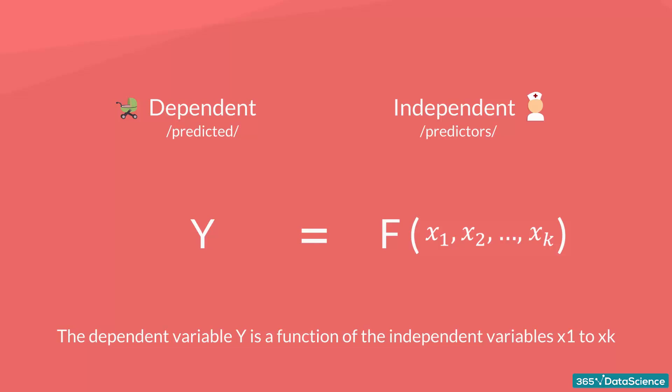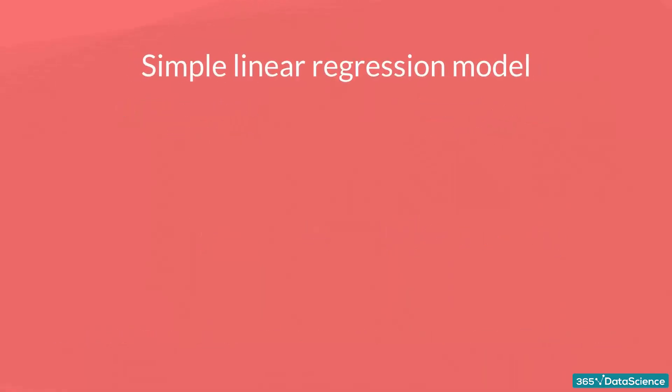The easiest regression model is the simple linear regression. Y is equal to beta 0 plus beta 1 times x plus epsilon. Let's see what these values mean. Y is the variable we are trying to predict, and is called the dependent variable.